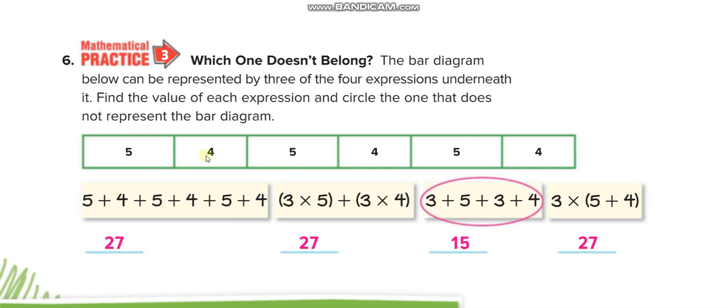Which one doesn't belong? Because there are 5, 4, 5, 4, 5, 4, and there's no 3. So this one doesn't belong to this bar diagram. Remaining three are correct. The answer is 27, not 15.